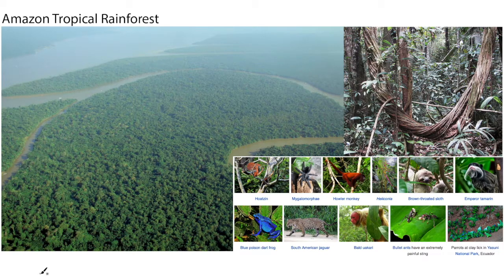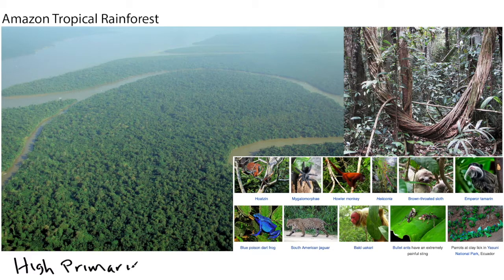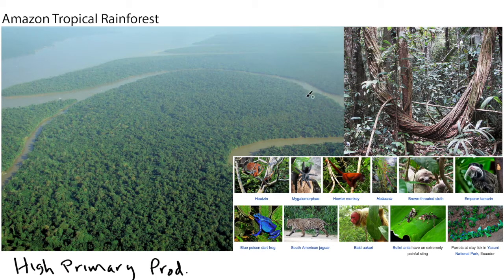I'd like to use the Amazon tropical rainforest as an example of a high primary productivity region. The Amazon rainforest is near equatorial latitudes — it is warm and gets sunlight all year round, resulting in a very large biomass. This is an overview image of dense forest, and in parts of the forest you have a huge diversity of plants and very high primary productivity.